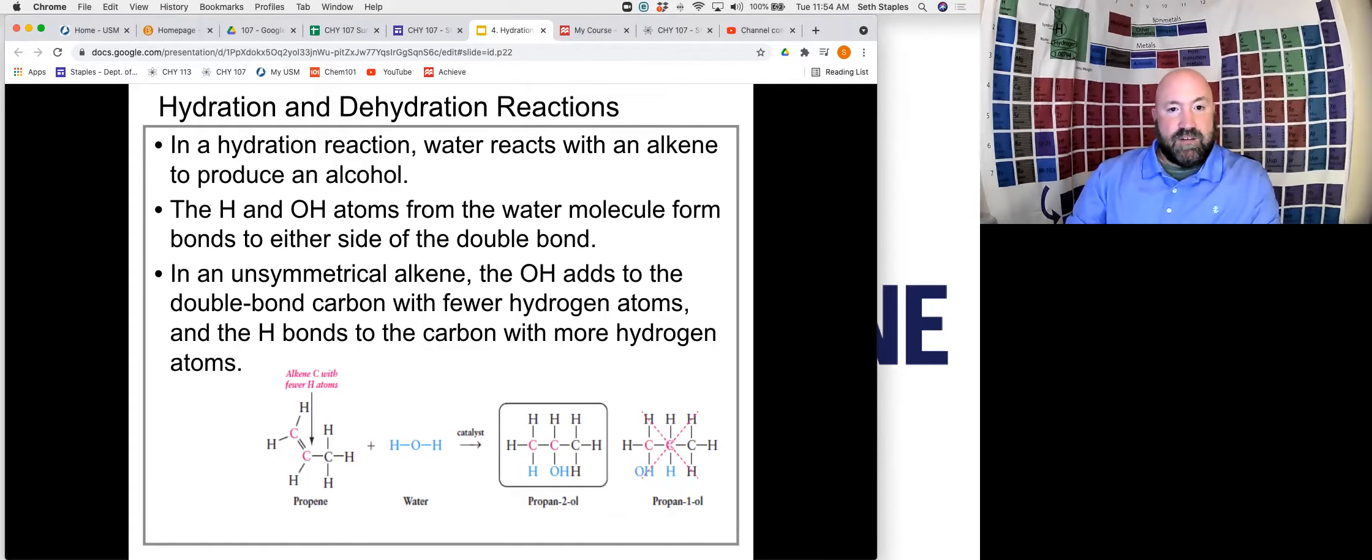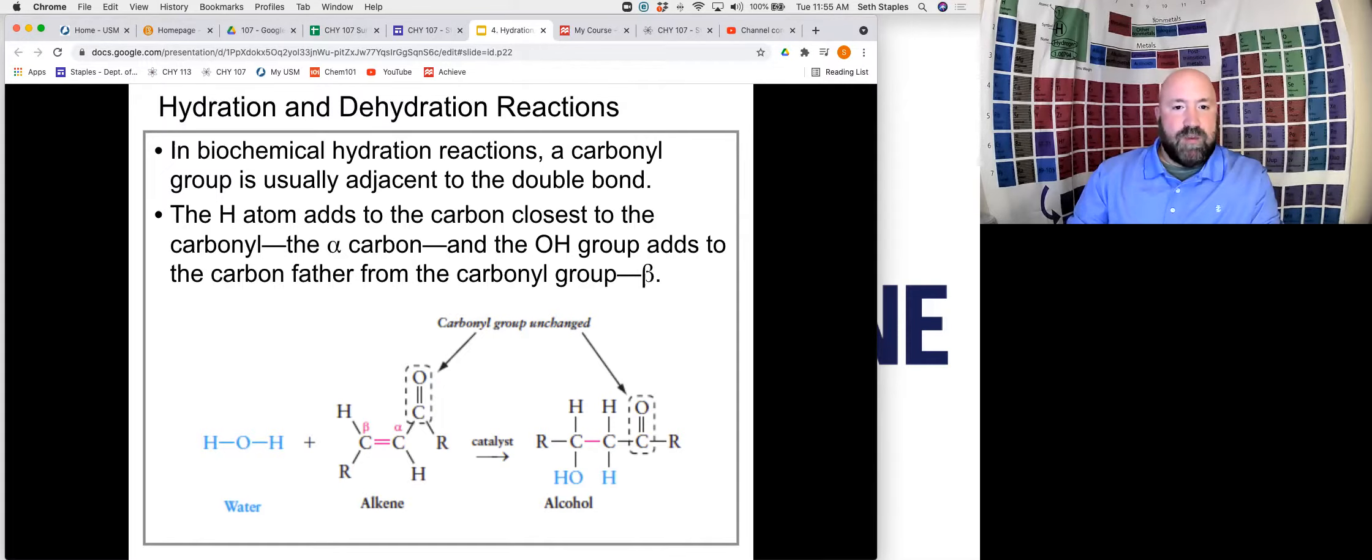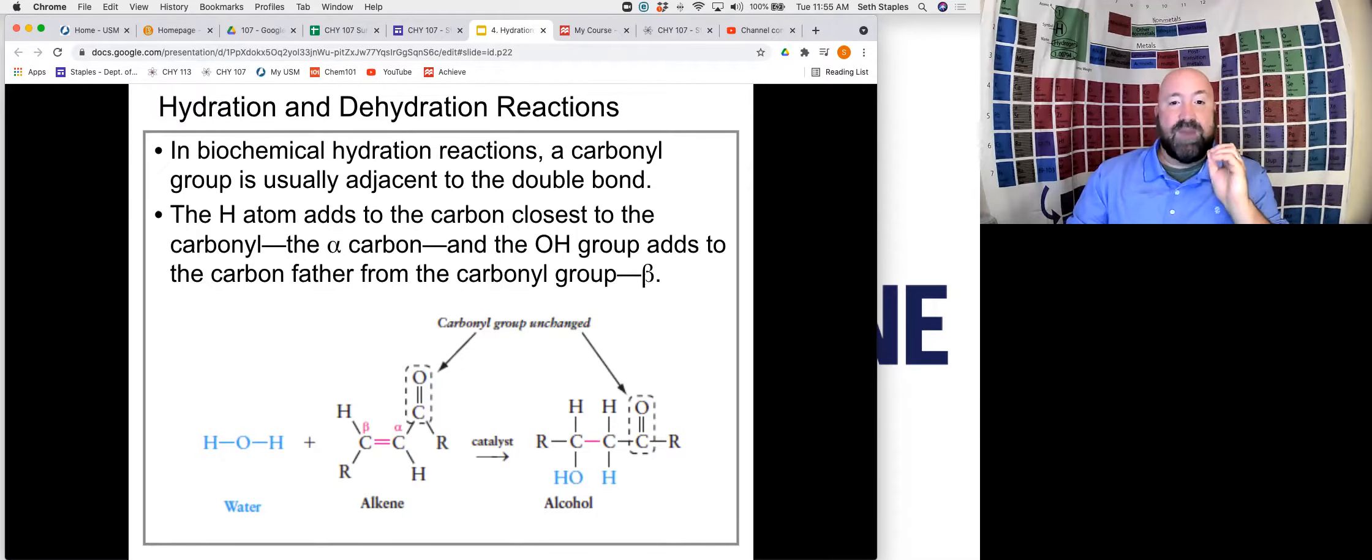A little bit more on the hydration still. In biochemical hydration reactions and in reactions that might happen within our bodies, very often we have a carbonyl group that's adjacent to our double bond. And so like here, here's our double bond here. So this is where the hydration is going to occur. We have our carbonyl group here. Now, one thing to note is that the hydration will not occur here at this carbonyl group. This remains unchanged. This will be unaffected.